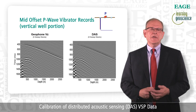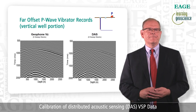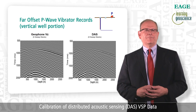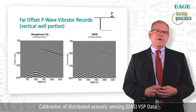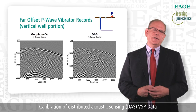This figure shows the corresponding responses for the mid offset P-wave source in the vertical section of the well. Again, we see an excellent agreement. This figure shows the responses for the far offset P-wave source. We see another excellent match. However, the theoretical response of the fiber is cosine squared theta, while the geophone is cosine theta. This is most apparent at shallow depths, where the angle of incidence of the seismic energy is almost 90 degrees to the fiber.